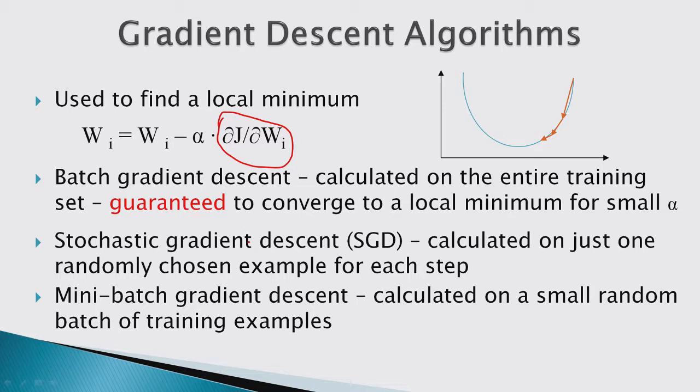There is batch gradient descent, where you calculate derivatives on the entire training set — for small alpha, this is guaranteed to converge to a local minimum. The problem is that with thousands of training examples, calculating on all of them at every step is very slow. So pretty much everyone training CNNs uses stochastic gradient descent, where you calculate the derivative on just one randomly chosen example per step, or mini-batch gradient descent, where you use a small random subset of training examples that changes at every step.